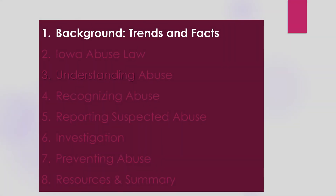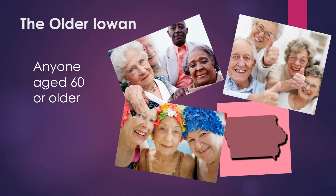Let's begin by looking at Trends and Facts about Elder and Dependent Adult Abuse. First, let's make sure that when we speak about Dependent Adult Abuse, we are using terms correctly. By definition, an older Iowan refers to anyone 60 years of age or older.